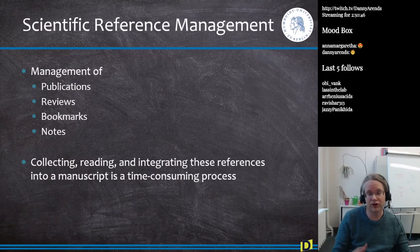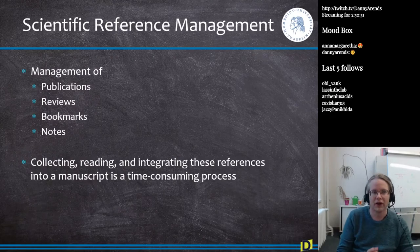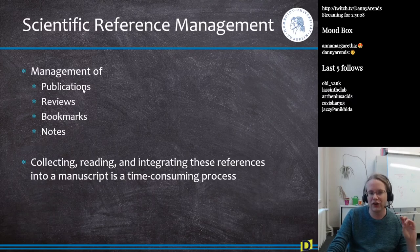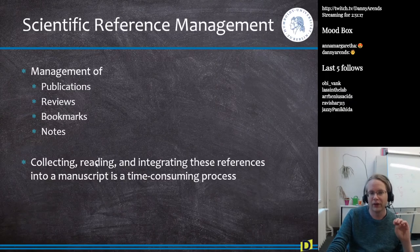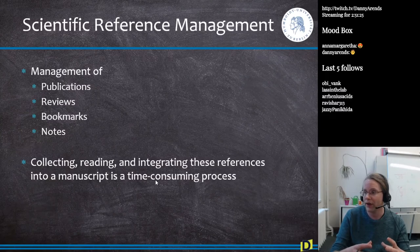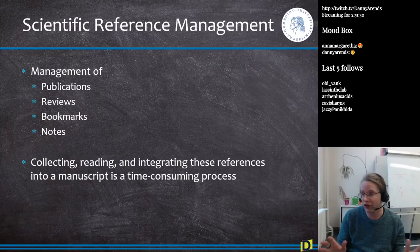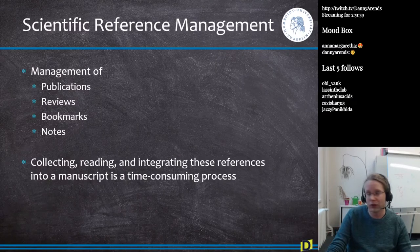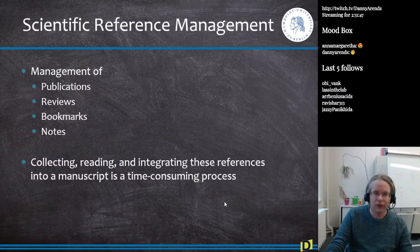Scientific reference managers are the way to do citations. A reference manager has four goals: it manages publications and reviews, allows you to bookmark and annotate articles, and integrates references into a manuscript efficiently. If you write an article, keeping track of all your citations manually is wasted time. Every journal has a different citation style, so every time you manually type an author name you're wasting time.